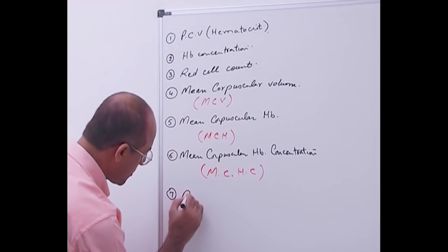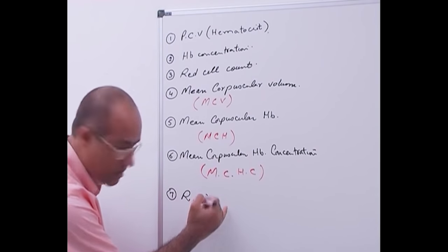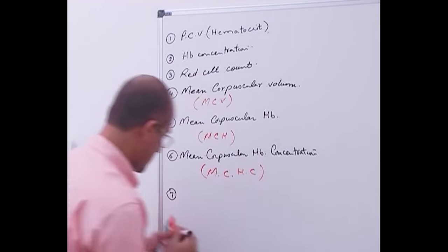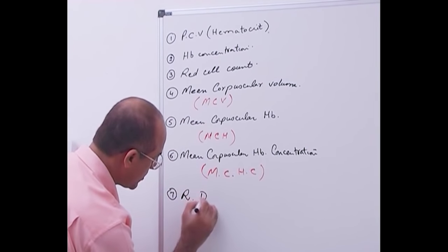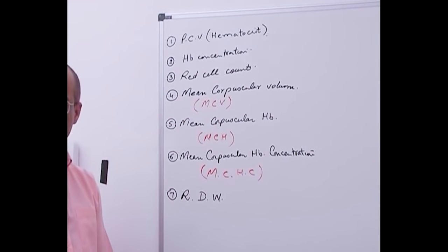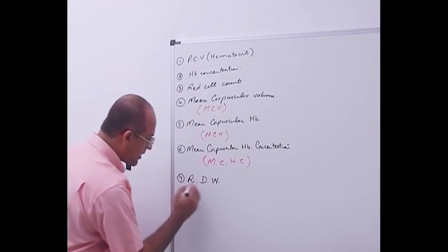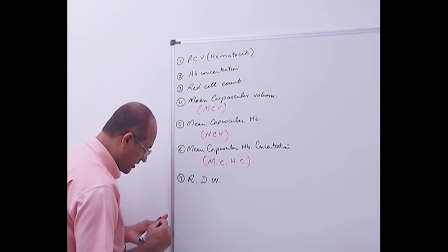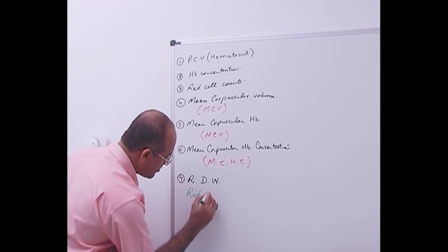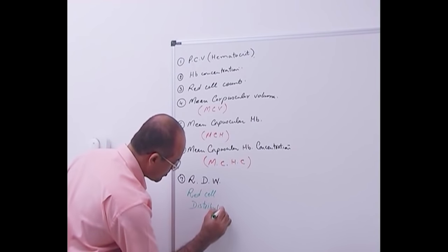Another term used these days is RDW — red cell distributive width. I will explain later what is really meant by that and what is the importance of this term.